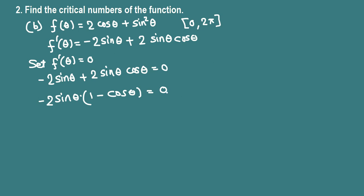Negative 2 sine theta equals 0, divided by negative 2 we get sine theta equals 0. 1 minus cosine theta equals 0 gives us cosine theta equals 1.